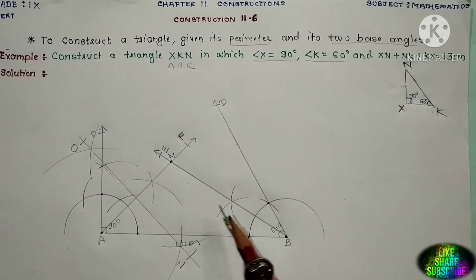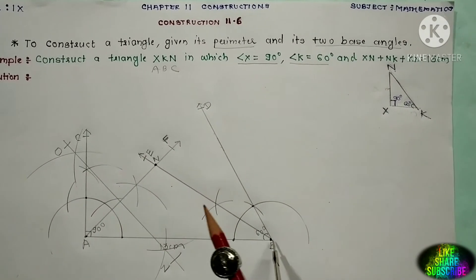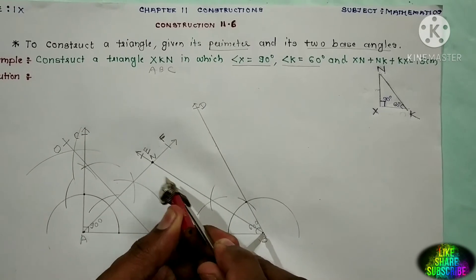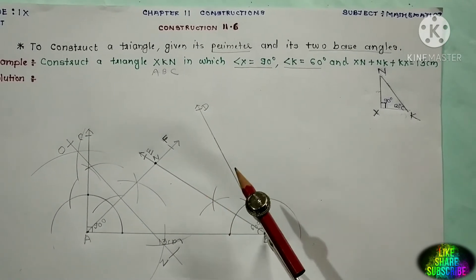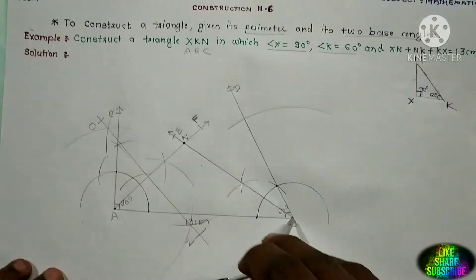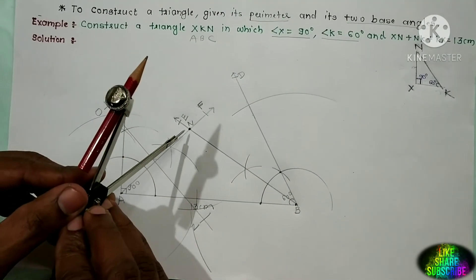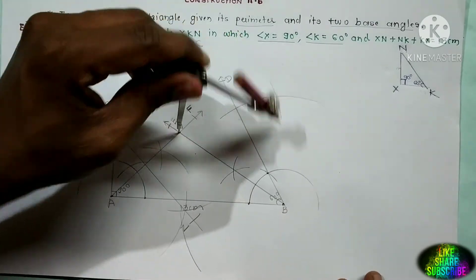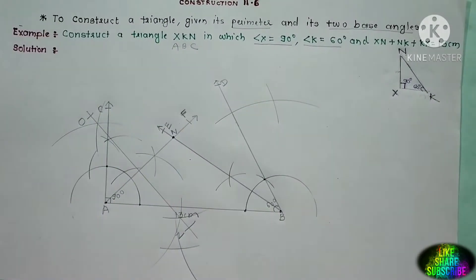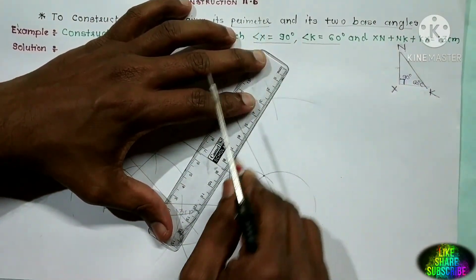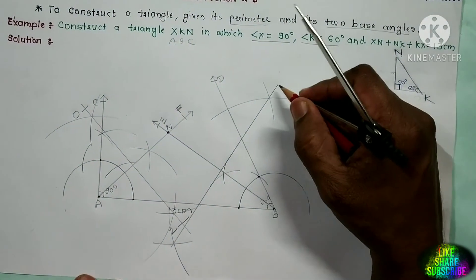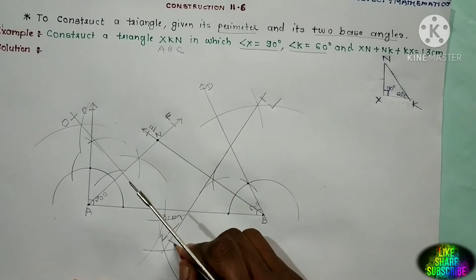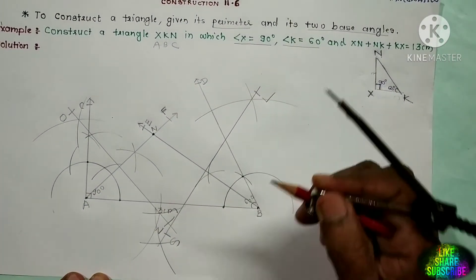Similarly, draw the perpendicular bisector of BN. Take the distance more than half of BN. From point B draw the first and second arcs, then from point N with the same distance draw the third and fourth arcs. Join these two points. Name this perpendicular bisector as LS. The perpendicular bisectors OZ and LS intersect at a point.